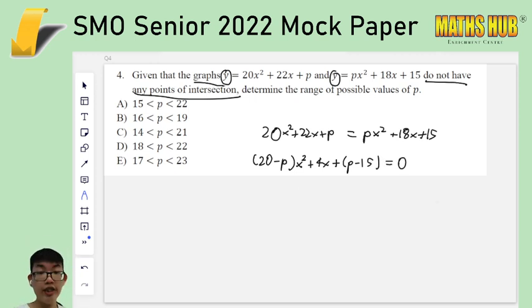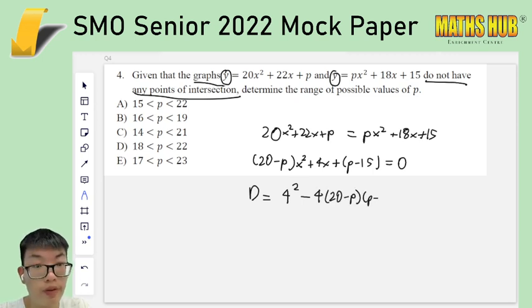So in this case, if we want to compare these and look for a solution to the simultaneous equation, since both of these are y, we can just equate them. And we are trying to find a value of p or rather the range of values of p such that this does not have any real solutions. If you recognize that these are all quadratic equations, then it becomes a usual problem to use the discriminant. This is the equation. And the discriminant, which is b squared minus 4ac is 4 squared minus 4 times (20-p) times (p-15), should be less than 0.